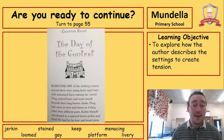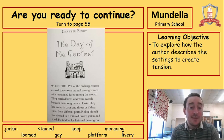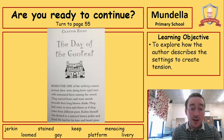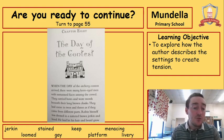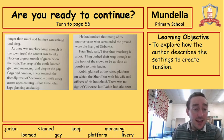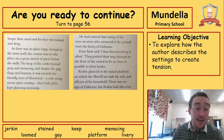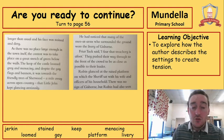Chapter Eight: The Day of the Contest. When the day of the archery contest arrived, there were many keen-eyed men with sun-tanned faces among the crowd. They carried bows and wore swords beneath their long brown cloaks. They had come in twos and threes as if they came from different parts. Robin himself was dressed in a tattered brown jerkin and hood. He had let his hair and beard grow longer than usual and his face was stained and dirty. As there was no place large enough in the town itself, the contest was to take place on a great stretch of green below the walls. The keep of the castle loomed grey and menacing, and despite the gay flags and banners, it was towards the friendly trees of Sherwood, a mile away across open country, that Little John kept glancing anxiously. He had noticed that many of the men-at-arms who surrounded the ground wore the livery of Gisborne.